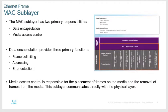The MAC sub-layer's primary responsibilities are data encapsulation — slapping that MAC address on there — and media access control. Data encapsulation decides how the frame is going to be sized or delimited, the addressing at layer two, and some kind of error detection. Each frame has a preamble signaling the start, then addressing information, then data, and at the back some kind of error correction mechanism to see if that packet got modified in transit or lost some information.